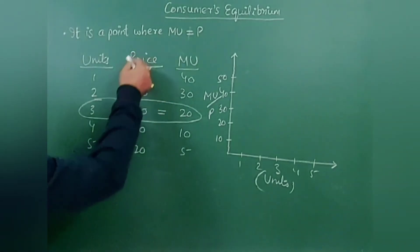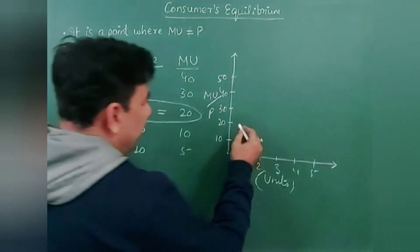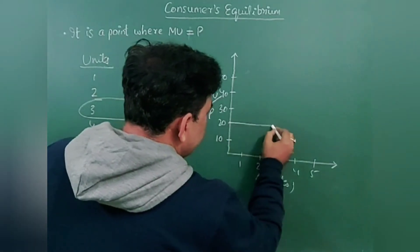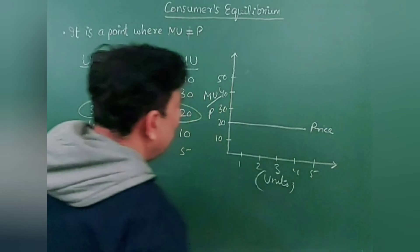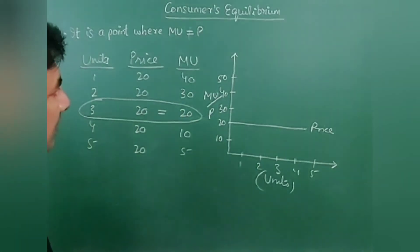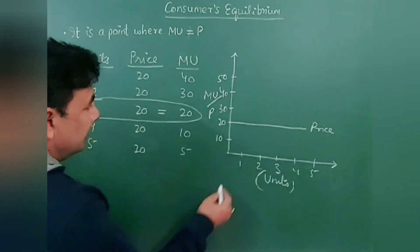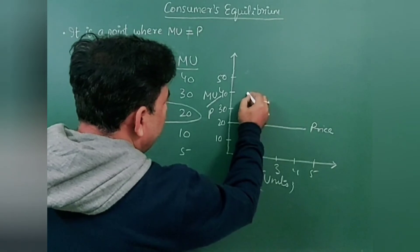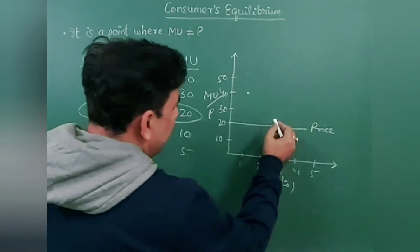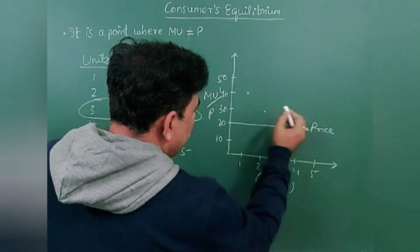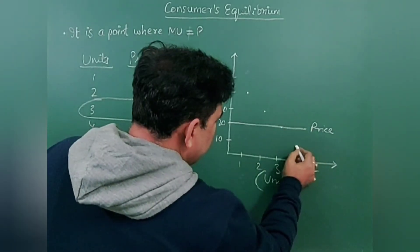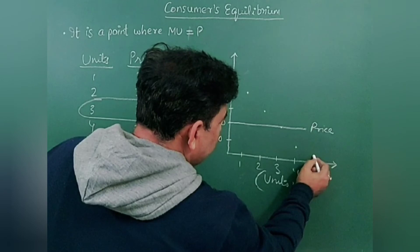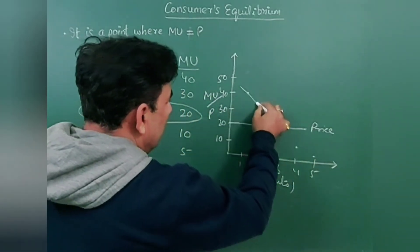See, the price is 20 here, that means it is constant. This is price, and marginal utility. For the first unit it is 40, and then for the second unit it is 30, third unit 20, then 10, and then 5. So draw this line.